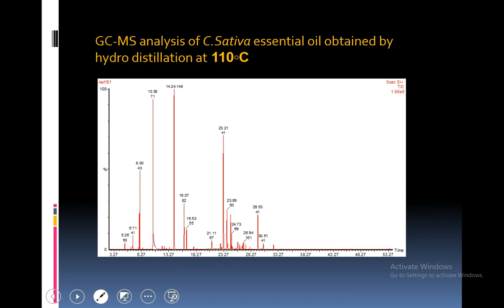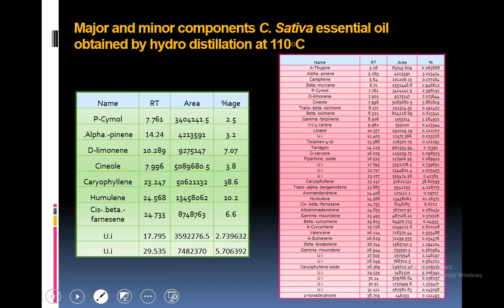GC-MS analysis of essential oil obtained at various temperatures and GC-MS analysis of various fractions were performed. In this table, you can see the maximum contents of caryophyllene were obtained, with a percentage of 38.6%. Major and minor components are shown. Various unidentified compounds were also detected as novel compounds. Caryophyllene was the first major compound at 38.6%, humulene at 10.6%, and humulene was also obtained at 7.07%. Minor compounds like para-cymol, alpha-pinene and cis-beta-farnesene were also obtained.